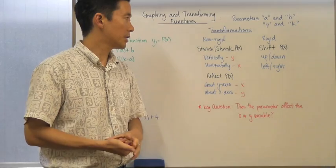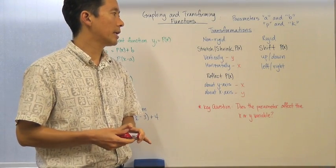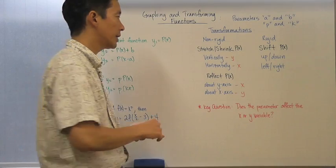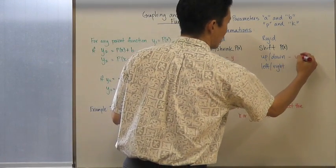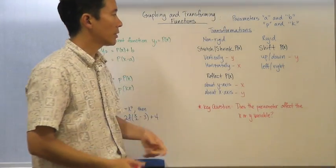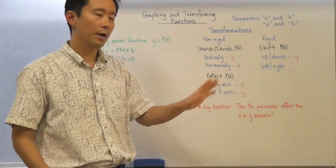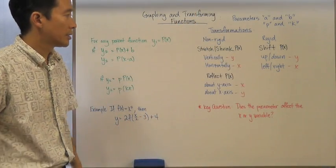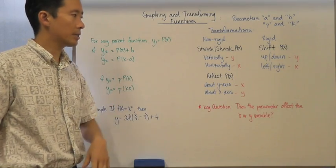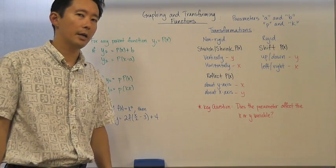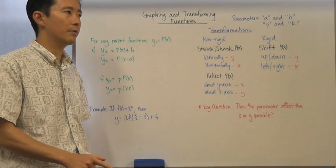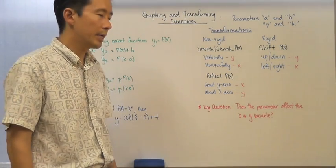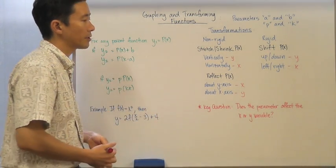Let's take a look at the shifts. If you shift p(x) up or down, you're affecting the y variables. And if you shift it left and right, then what you're doing is affecting the x variable. So that's going to be key — you want to make sure to recognize which variable is actually being affected, because that will clue you in as to how the parameter is affecting the parent function as a whole.